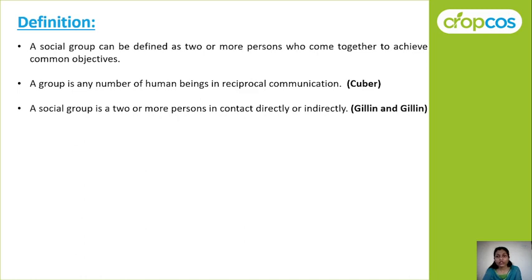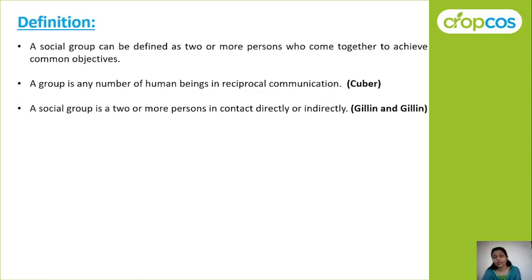There is another definition: a group is any number of human beings in reciprocal communication — any group of human beings in two-way communication is a social group. And one more definition by Ginsberg and Ginsberg: a social group is two or more persons in contact directly or indirectly.